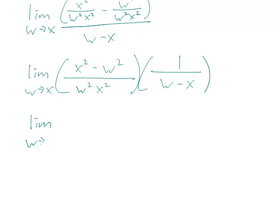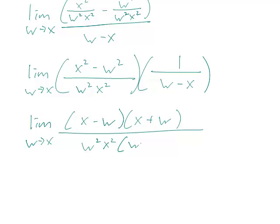Because the top just factors to x minus w and x plus w using difference of two squares. And the bottom is w squared x squared w minus x.